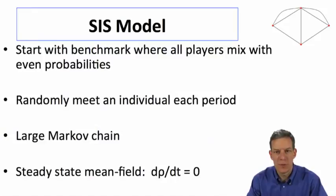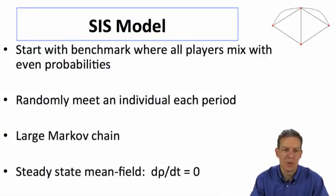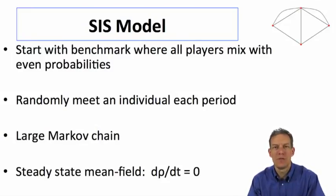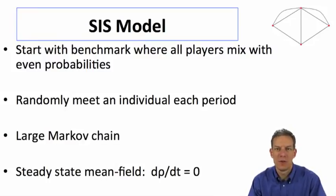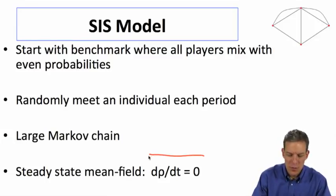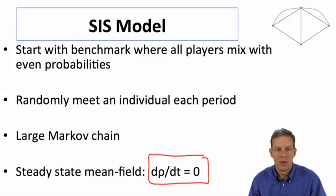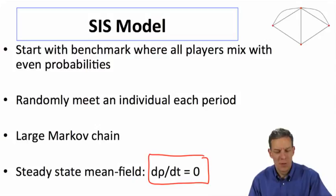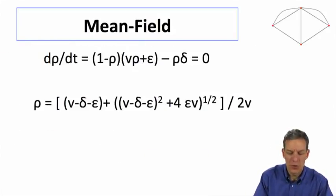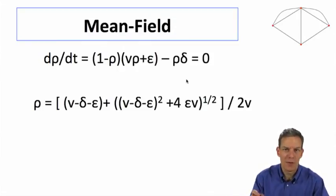So this is like the BAS model, except here you can actually reverse yourself and get well, and that's going to happen with a rate delta greater than zero. Let rho be the percent of the population that's infected at any point in time. What we're going to do is start with a simple version where all the agents in the society mix with even probabilities — you randomly meet one person per unit of time — and that gives us a large Markov chain. The steady state distribution is just going to be one in which the change of rho with respect to time is zero.